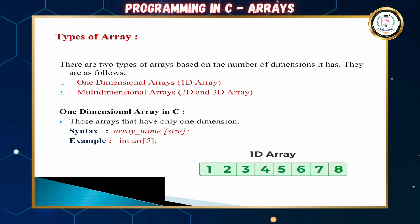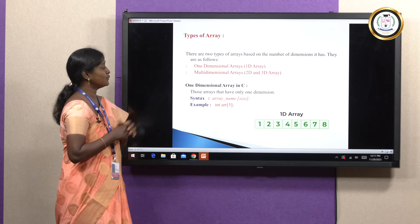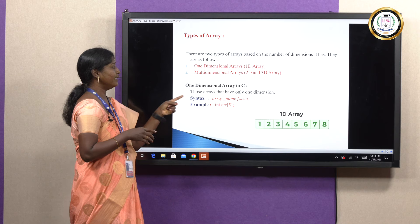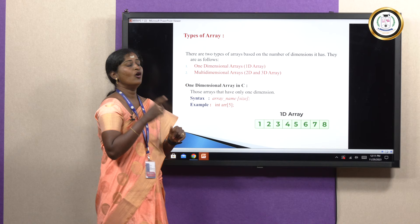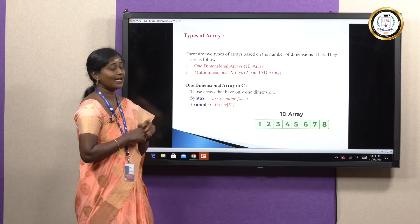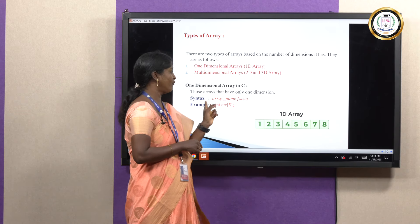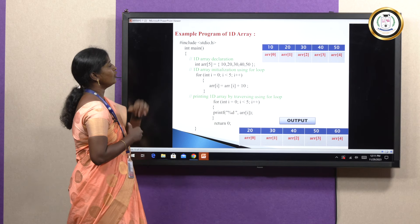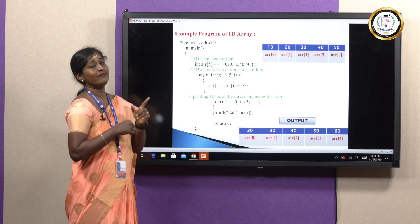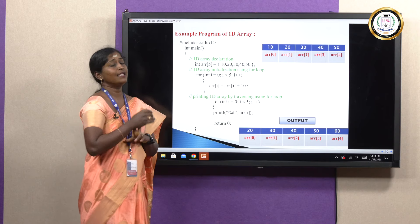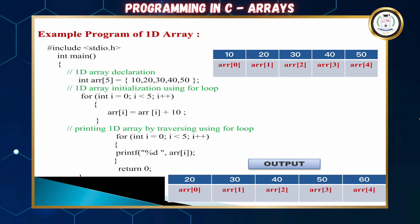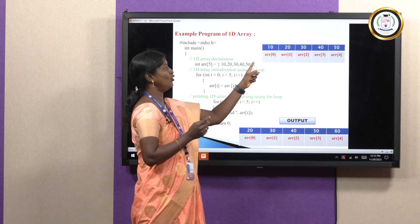There are two types of arrays: one-dimensional and multi-dimensional. A one-dimensional array has only one dimension, with syntax: int ARR[5]. It has one row of 5 elements. For example, declaring int ARR[5] = {10, 20, 30, 40, 50} — the index starts from 0 and ends at n-1, i.e., ARR[0] to ARR[4].